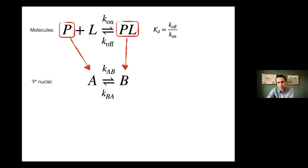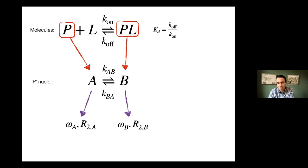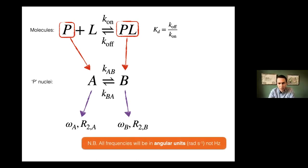Each spin state, A and B, has associated characteristic frequencies arising from the chemical shift — these are field dependent — and relaxation rates, particularly R2s. All the frequencies we'll be thinking about are in angular units: radians per second, not hertz. This just keeps things cleaner.